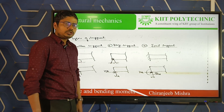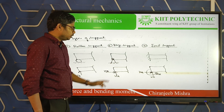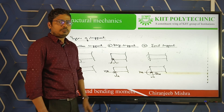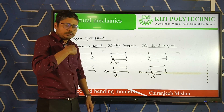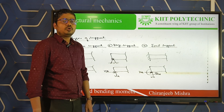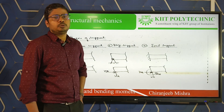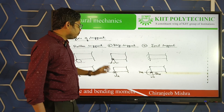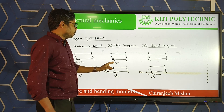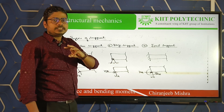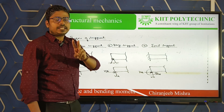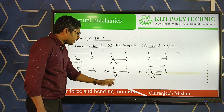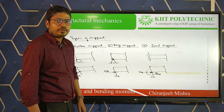In hinge support, there are two reactions. To understand reactions: suppose I am standing on a beam, my weight acts downward. By Newton's third law, every action has an equal and opposite reaction — the ground gives an upward reaction. So every support gives reactions. Three possible reactions are horizontal, vertical, and moment reaction. Hinge support has horizontal and vertical reactions only.